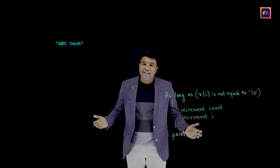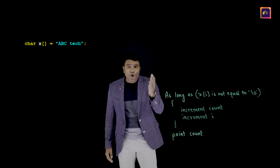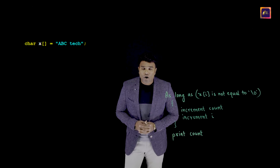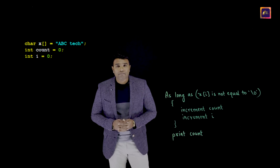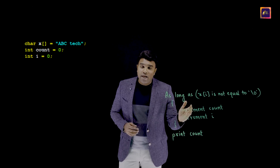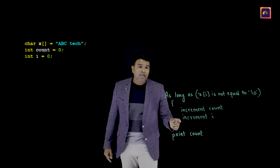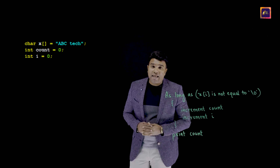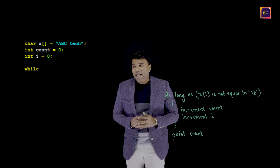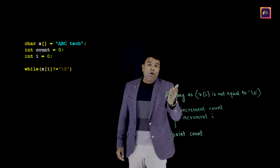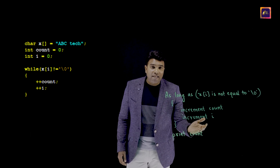To write the complete program: I begin by creating a character array storing the string 'abc tech'. I declare two variables, count and i, both initialized to zero. Then I convert the pseudocode into C: the 'as long as' becomes a while loop, x[i] not equal to null is written in C syntax, the body increments count and i, and finally the print statement outputs the result.